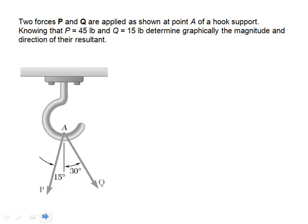Notice as I read the problem I will emphasize certain things that are not actually in the wording of the problem. Two forces vector P and vector Q are applied as shown at point A of a hook support, knowing that the magnitude of P equals 45 pounds and the magnitude of Q is equal to 15 pounds, determine graphically the magnitude and direction of their resultant. The bold face print indicates P and Q are vector quantities, and the non-bold faced P and Q are strictly magnitudes of those vector quantities.